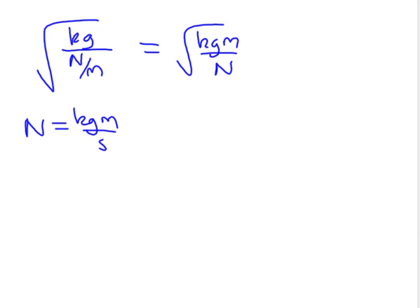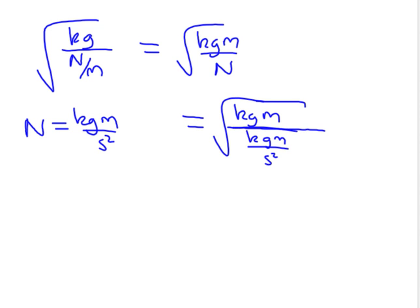So first thing is, the meters pop up top, so you have a kilogram meter over a newton. And we know by definition, a newton is a kilogram meter per second squared. So if we plug that in, then we get square root of kilogram meters divided by a kilogram meter all over a second squared.